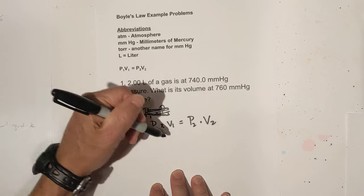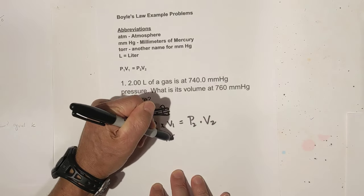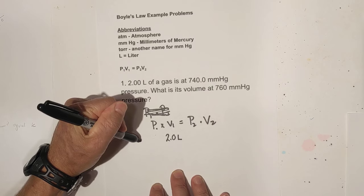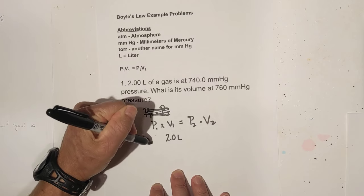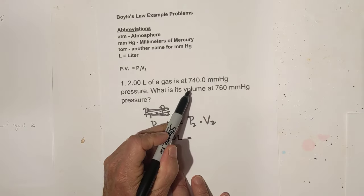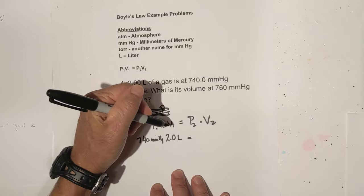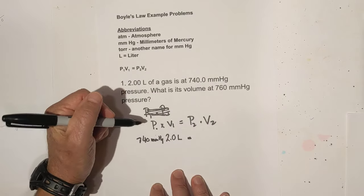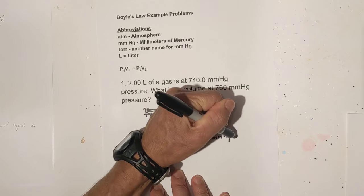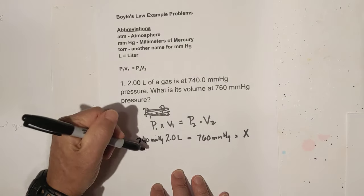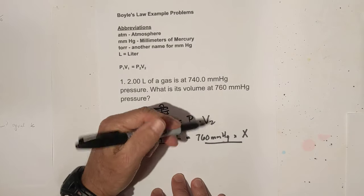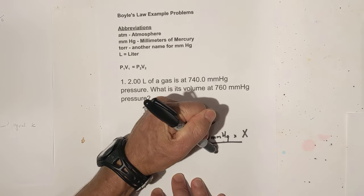Now what we need to do is identify what we have, and then solve for the missing variable. So we have two liters, so that's volume, so I'm going to write two liters. And it says it's at 740 millimeters of mercury, so 740 mmHg. You have a volume, you're looking for volume, but you have 760, so you have another pressure reading, 760 times x for volume. So we have everything set up.